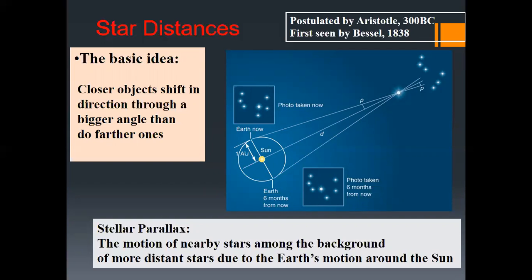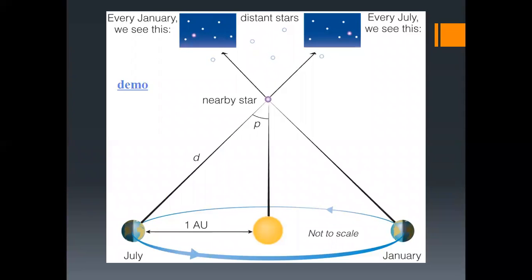Stellar parallax is the parallax observed in stars. This shift happens due to the location of the Earth with respect to the Sun. Every year the Earth revolves around the Sun, so if we look at a nearby star in January, we see it in one direction. Then six months later in July, we observe the same star from the other side — relative to distant stars, this star's location appears to have shifted. The nearby star shows a big parallax shift between January and July, while more distant stars shift much less.